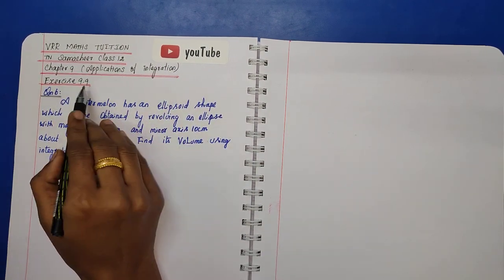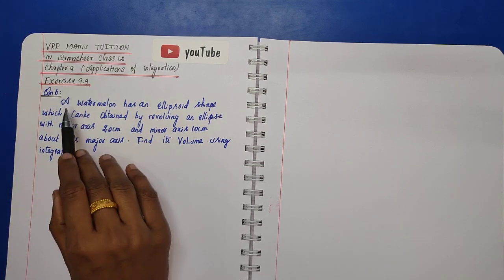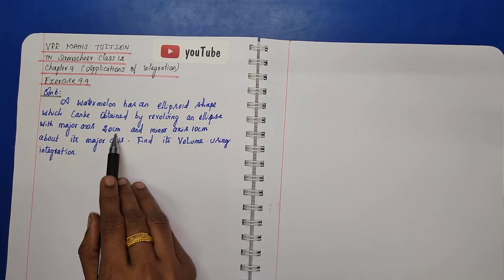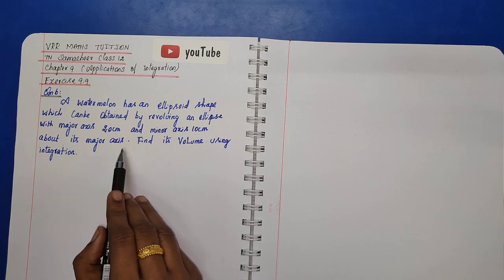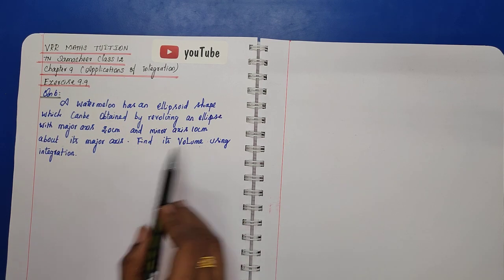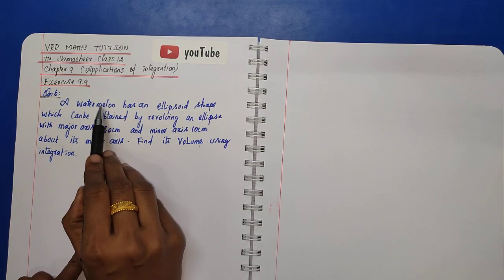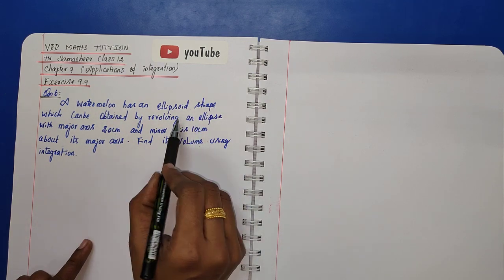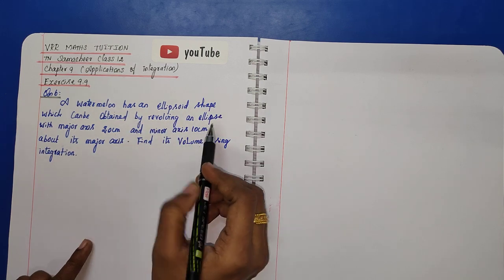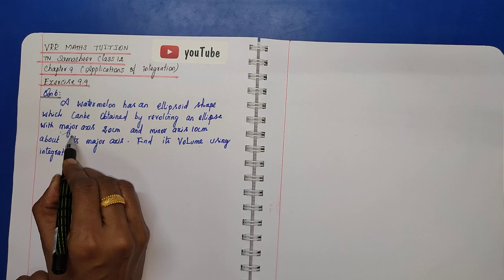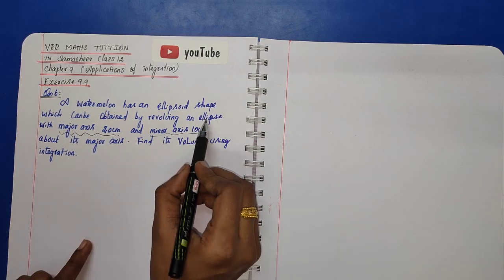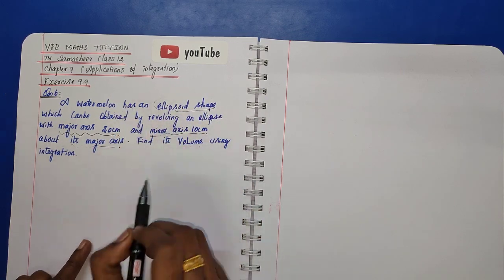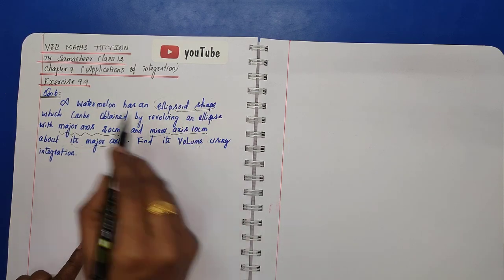Chapter 9, Applications of Integration, Exercise 9.9, Question number 6. A watermelon has an ellipsoid shape which can be obtained by revolving an ellipse with major axis 20 centimeters and minor axis 10 centimeters about its major axis. Find its volume using integration. In this question, the watermelon shape is an ellipsoid — we need to calculate the volume of the ellipsoid shape.